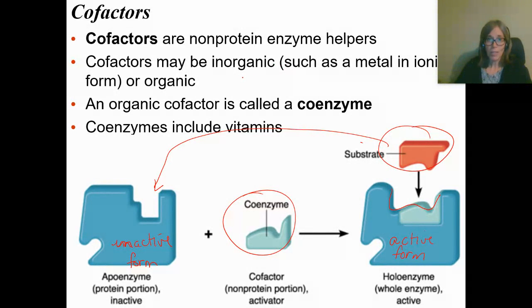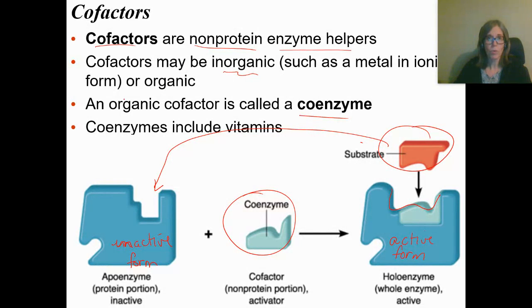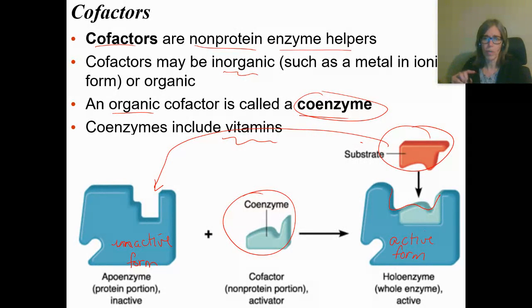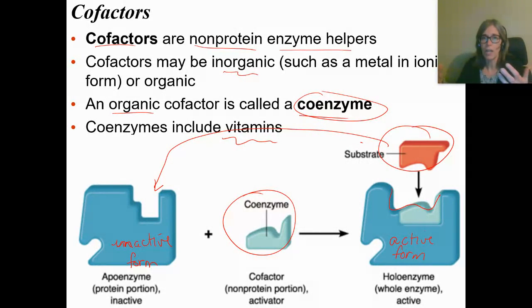Not every enzyme needs a cofactor, but some of them do. The difference between a cofactor and a coenzyme is just that a coenzyme is a type of cofactor. Cofactors are non-protein enzyme helpers. Cofactors can be inorganic, like a metallic ion, or they can be organic. If they're organic, we'll call them a coenzyme. Coenzymes include vitamins. For example, folic acid is a vitamin that is converted to another form and then used to make some of the nucleotides that DNA is made out of. So if you're doing a lot of mitosis, you need a lot of DNA and you need a lot of folic acid to help make some of those nucleotides.